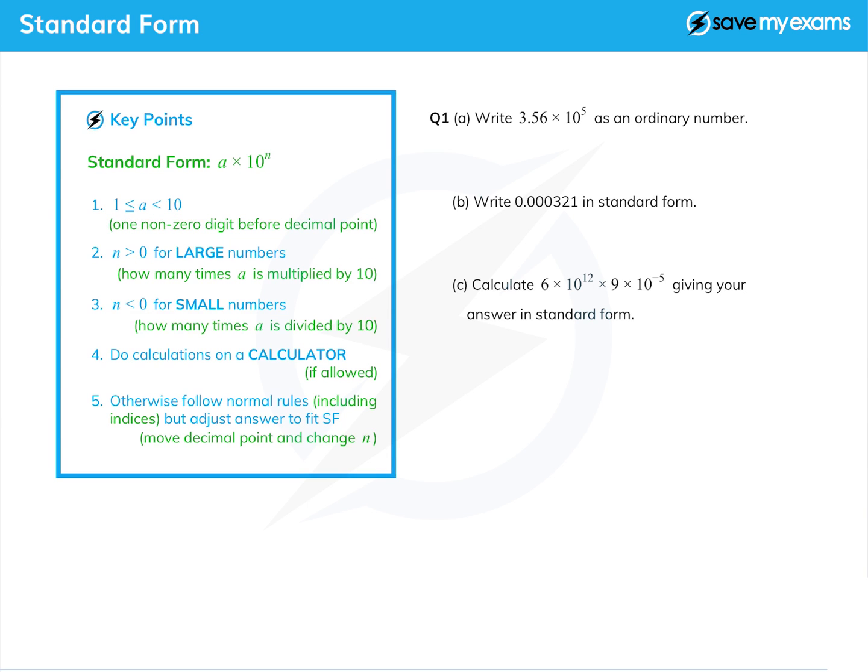So 'a' is a number with one non-zero digit, and then 'n' is greater than zero for what you might call large numbers. That's how often we multiply 'a' by 10 to get our original number. And it's less than zero for small numbers, where in fact we're dividing by 10 to get very small numbers.